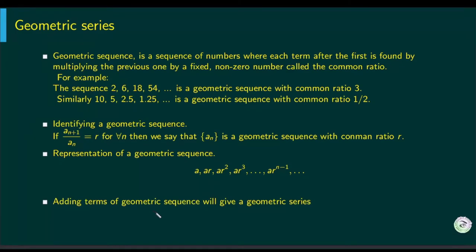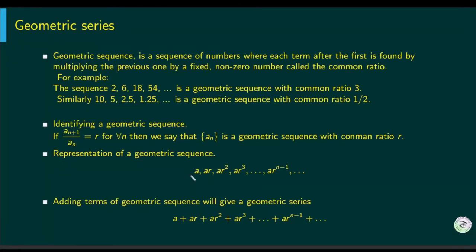Adding the terms of a geometric sequence gives a geometric series. Using a equals 2 and common ratio 3 gives the first example; using a equals 10 and common ratio one-half gives the second. Any geometric sequence can be identified by a and r, and adding its terms gives the geometric series.